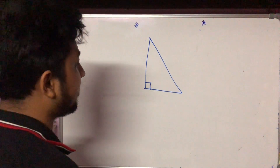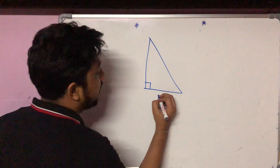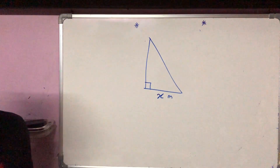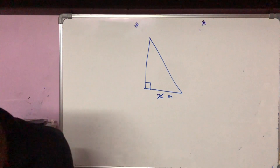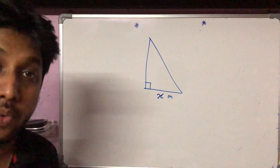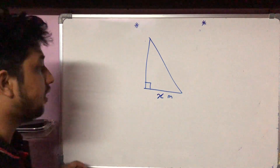Let's assume that the base is the shortest side, and we suppose its length is x meters. We are told that the hypotenuse is 1 meter less than twice the shortest side.